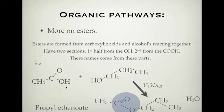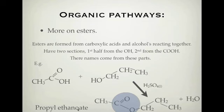Each time you form an ester, the OH from the carboxylic acid and the H from the hydroxyl group combine to produce water — H2O. The name of this molecule is propyl ethanoate. The first half, 'propyl', comes from propanol; the second part, 'ethanoate', comes from ethanoic acid — the '-oic acid' changes to '-oate'. So the alcohol becomes a '-yl' and the acid becomes an '-oate'.